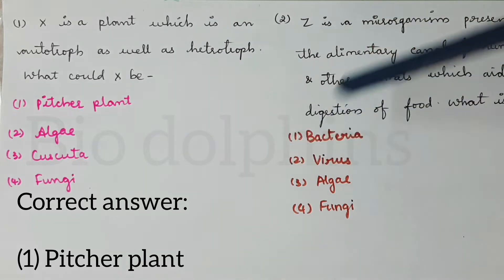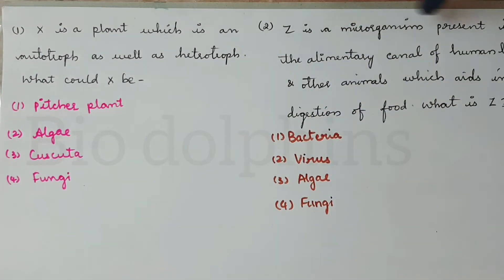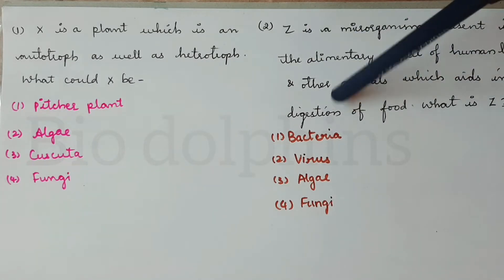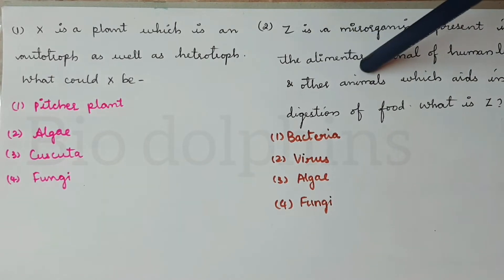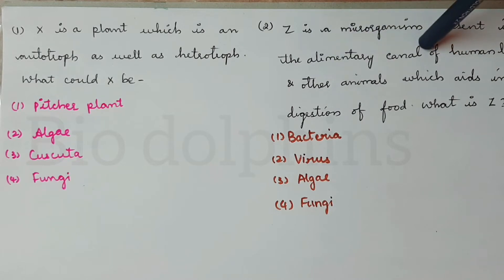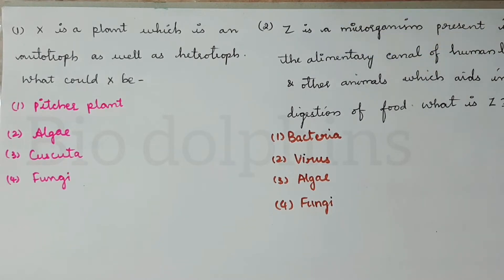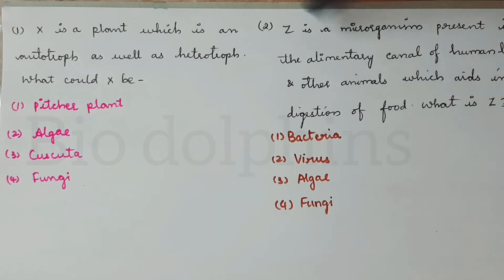Next question: Z is a microorganism present in the alimentary canal of human beings and other animals which aids in digestion of food. What is Z? So Z is a microorganism found in the alimentary canal that helps with digestion of food.